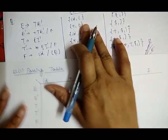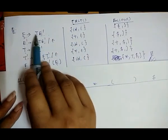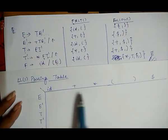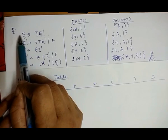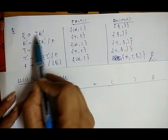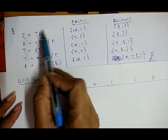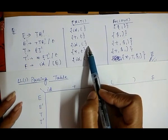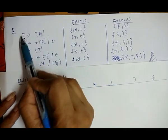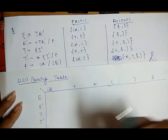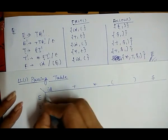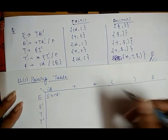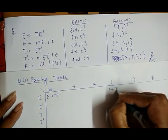For the first production E → tE', we compute FIRST(tE'). FIRST(tE') equals FIRST(T), and FIRST(T) is {id, open brace}. This means we place the production E → tE' under the column of id and also under the column of open brace in the parsing table.